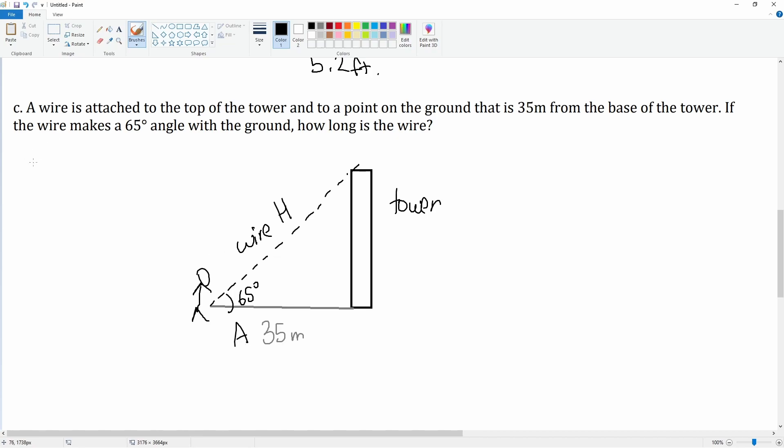Here we draw that person. 35 would be its adjacent and we want hypotenuse, so that is cosine. So we know cosine of our angle which is 65 degrees is equal to adjacent over hypotenuse.